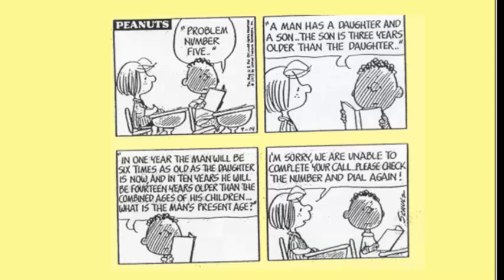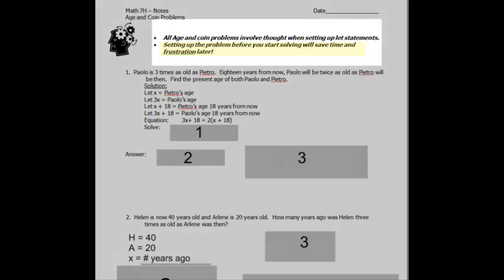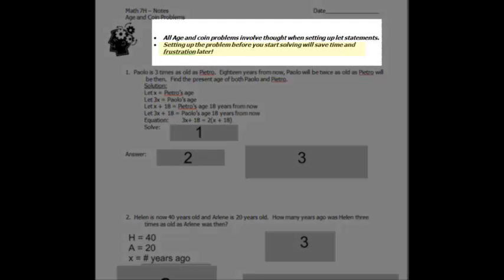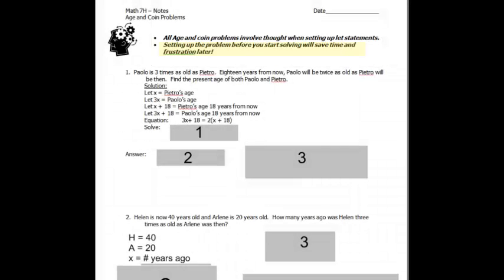And poor Peppermint Patty, I'm sorry, we're unable to complete your call. Please check the number and dial again. Okay, so let's take a look at how to get through these age problems. Again, all age and coin problems involve thought when setting up your let statements. It's going to save you a lot of time and frustration if you set up the problem correctly. Do not take a shortcut at this stage.